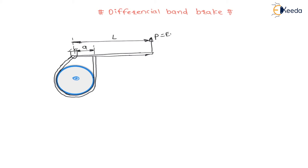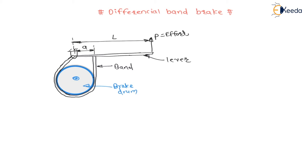Here force P is applied as effort for braking purpose, and it is applied on the lever. Now one end of the lever is connected to the band. This is a steel band coated with friction material — this we have already seen in previous lectures. And this band is wound over the brake drum.